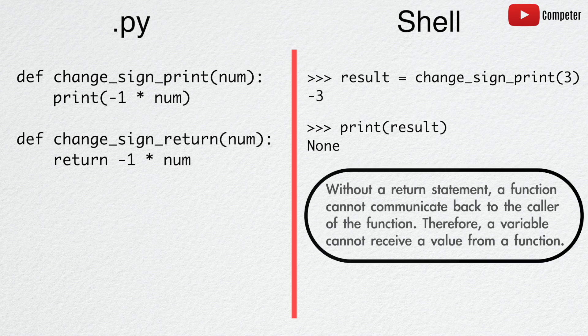Without a return statement, a function cannot communicate back to the caller of the function. Therefore, a variable cannot receive a value from a function.